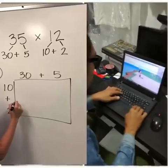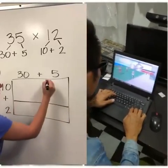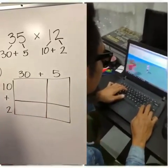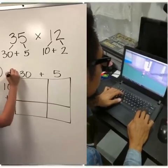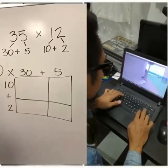Where your plus signs are I want you to draw lines through the middle and down it. And then in the very corner we're still multiplying so I'm gonna put a big multiplication sign.